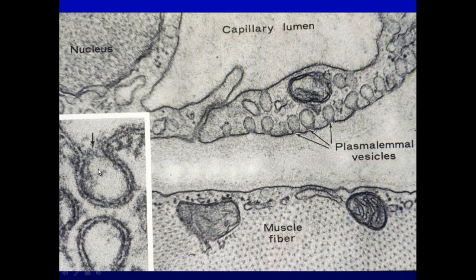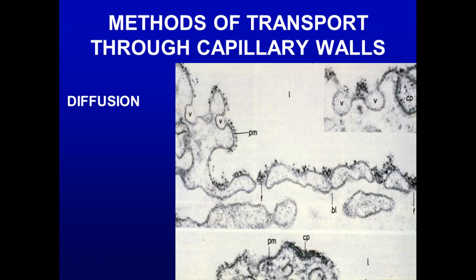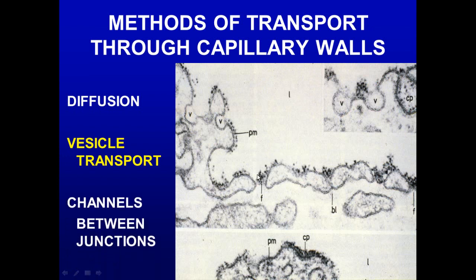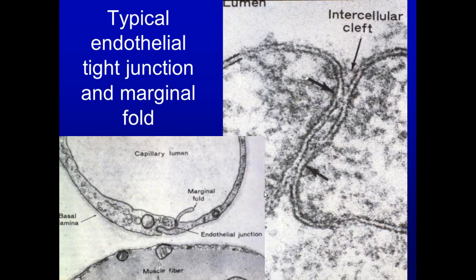Here we see a junction between two endothelial cells with invagination of the plasma membrane — vesicles are pinching off from the surface and moving across. That would be bulk flow. In other cells you may have simple diffusion, vesicle transport, or even channels between cells. There may be a fenestra or a sinusoid. Here we see a typical endothelial cell with a marginal fold flipping over the junction, and two cells making the tight junction.